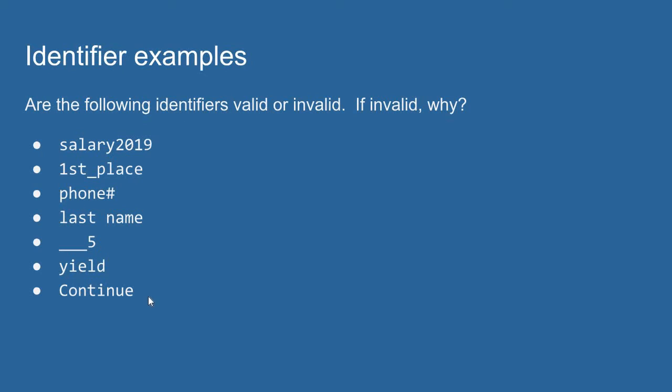In our final example, I have the word capital continue. Lowercase continue is a keyword in Python. But if I capitalize the C here, I have changed the identifier enough so that it is a unique identifier. It is distinguishable from the keyword, and this is a valid identifier.